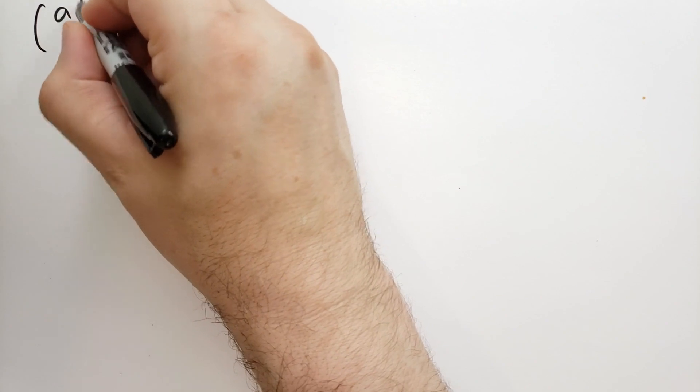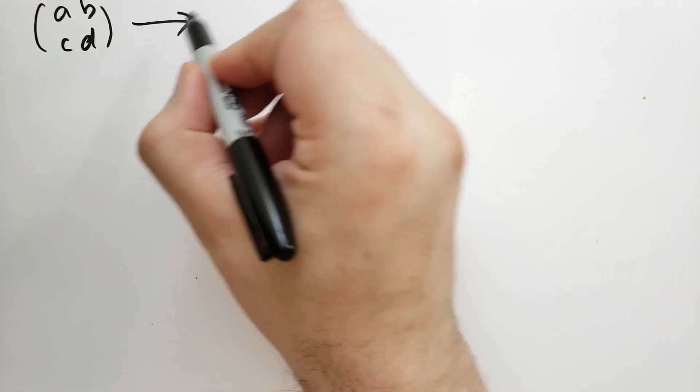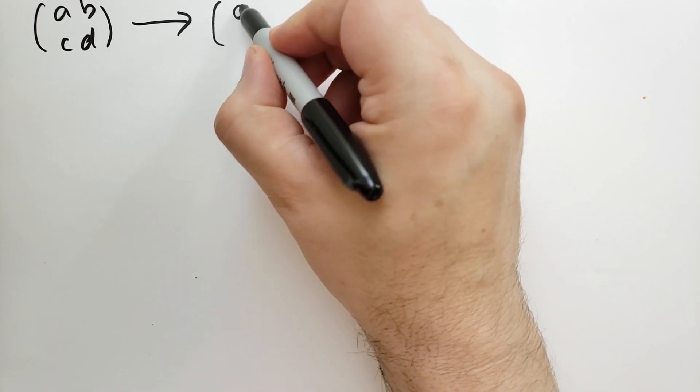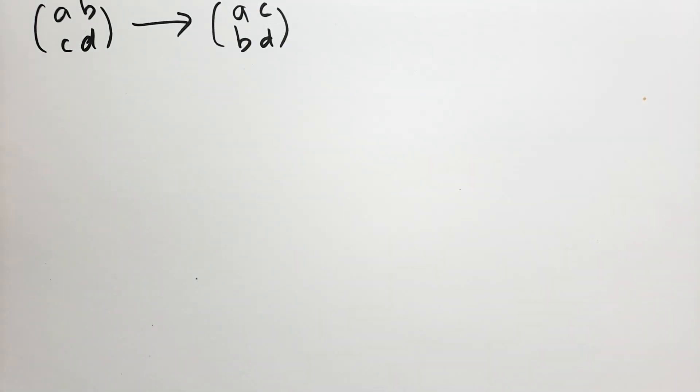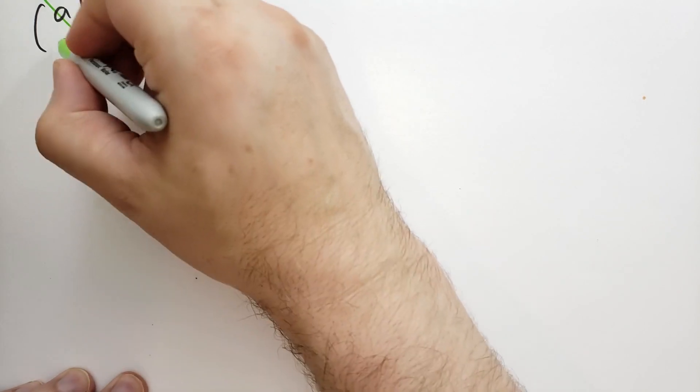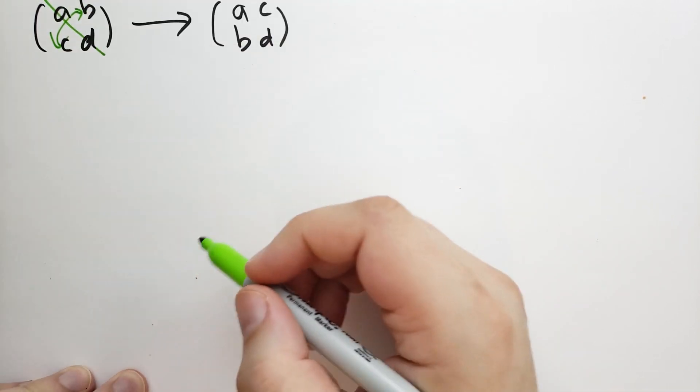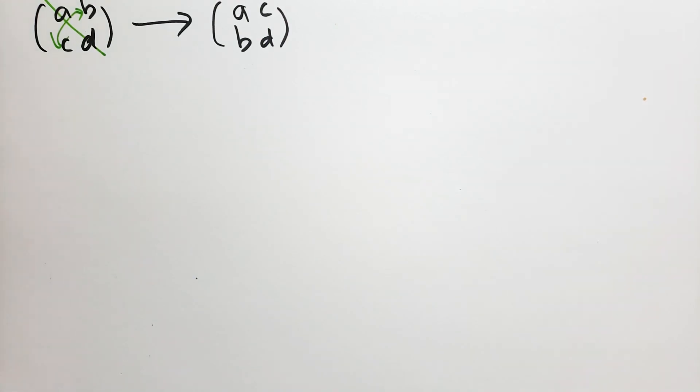One of the basic operations we do with matrices, and at first this seems kind of pointless, but it's called transposition. So suppose you have a matrix A, B, C, D, and we transpose that to the matrix A, C, B, D. What we've done when we've transposed is we've left the diagonal alone and we've flipped everything else. So A and D stay the same, but C and B flip.